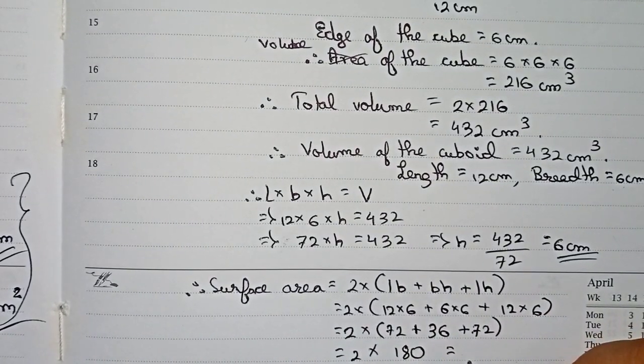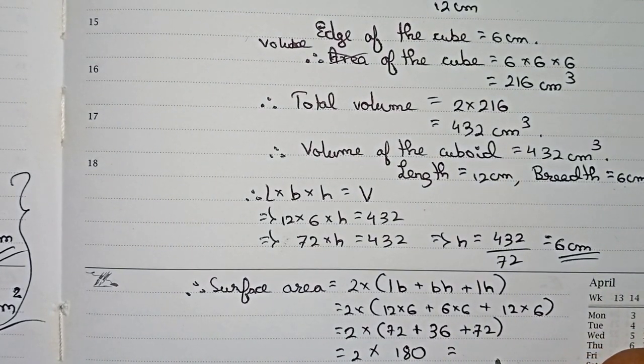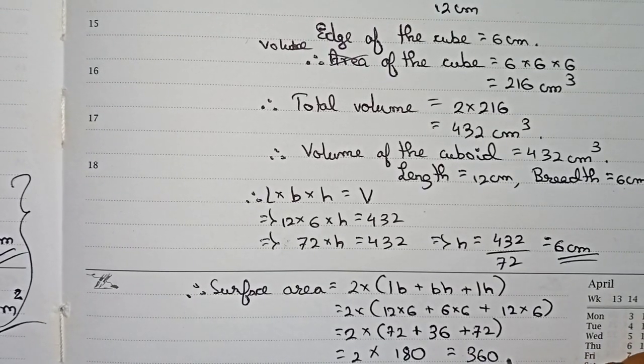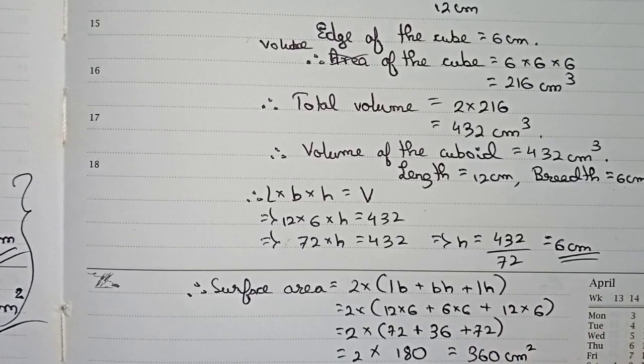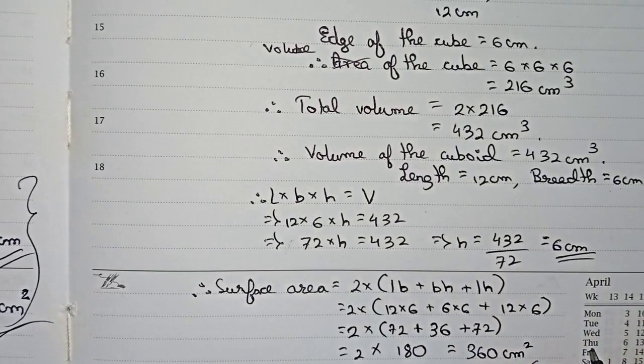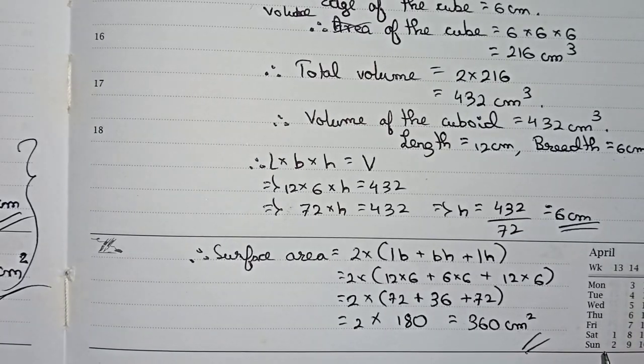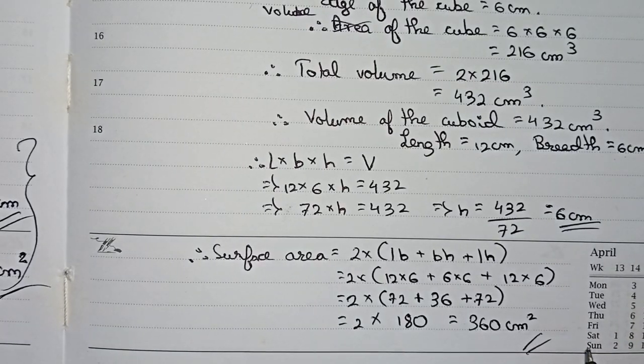So this is the total surface area of the cuboid - 180 square centimeters. This is the final answer for this question.